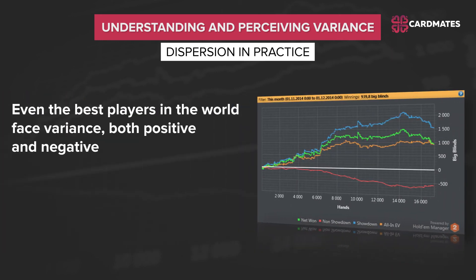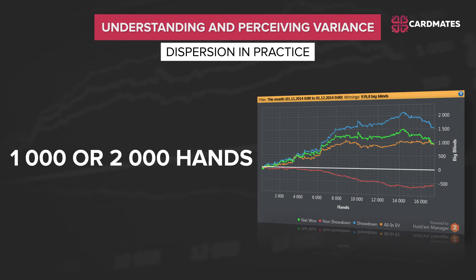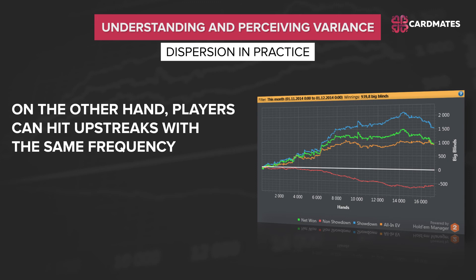Dispersion in practice: even the best players in the world face variance, both positive and negative. It's not uncommon for a good cash player to lose 10 buy-ins in a row due to a downswing. Good cash players who play hundreds of thousands of hands a year can expect to find themselves in an inevitable and dangerous 15 to 20 buy-in downswing. This is normal and to be expected with large samples. These bands of dispersion can vary in duration, and we never know how long they will last. Sometimes they happen over a small sample of only 1,000 or 2,000 hands; in other cases, they will drag on for tens of thousands of hands. On the other hand, players can hit upswings with the same frequency. When we think about variance, we have to think about both negative variance — downswings — and positive variance — upswings.